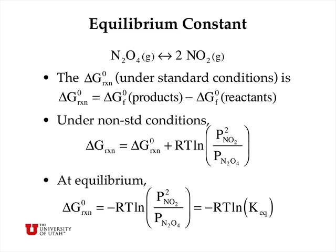Under non-standard conditions, we can use the pressure dependence of G to say that ΔG for the reaction is equal to ΔG° of the reaction, that is to say under standard conditions, plus this term RT log of P of the products divided by P of the reactants, raised to the power of the stoichiometric coefficients.